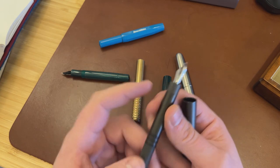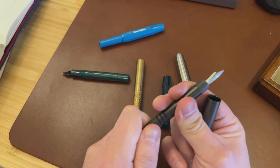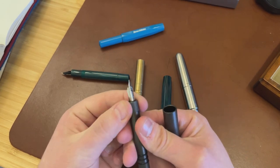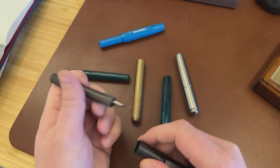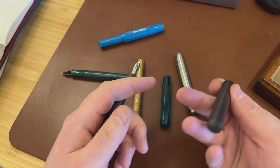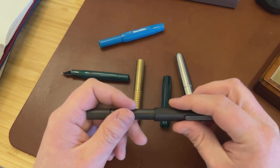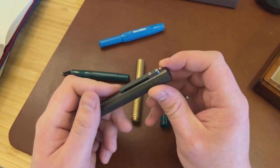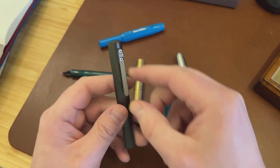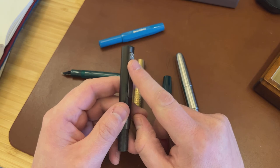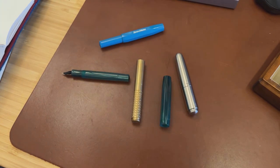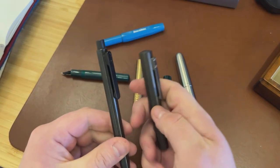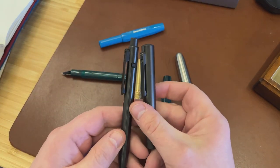The second thing that's of interest is this knurling. It's not functional at this end, it is functional at this end to remove the actual pen from inside the barrel. But it gives this sort of industrial feel to it. And that is reinforced by this very strong screwed on clip,